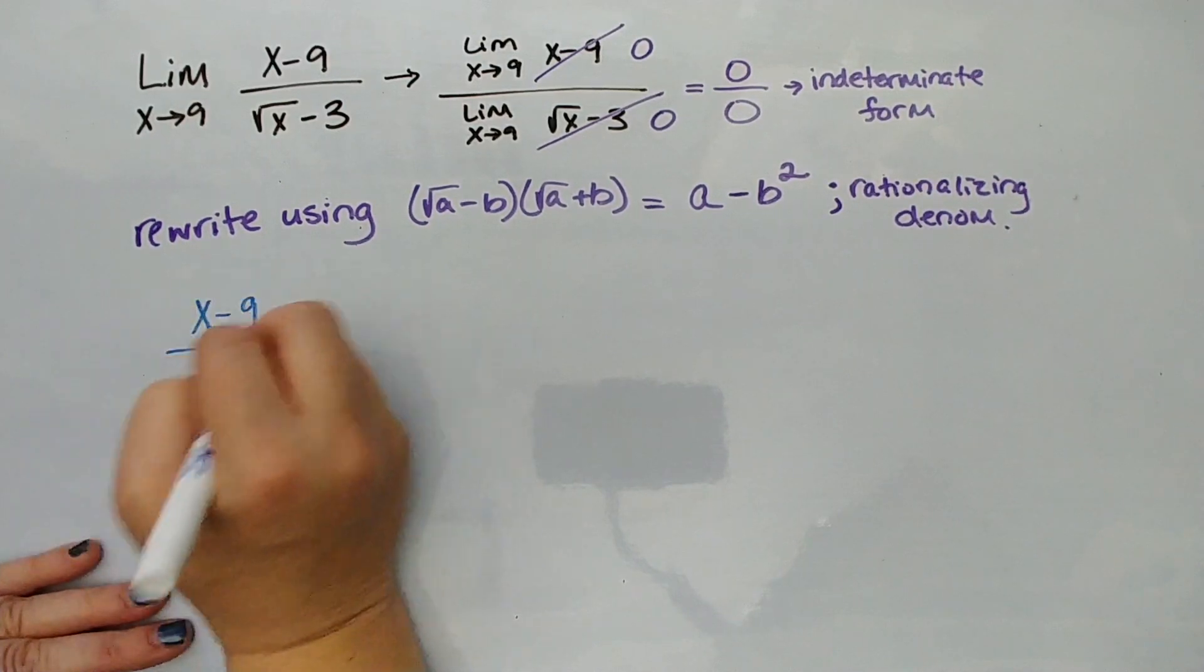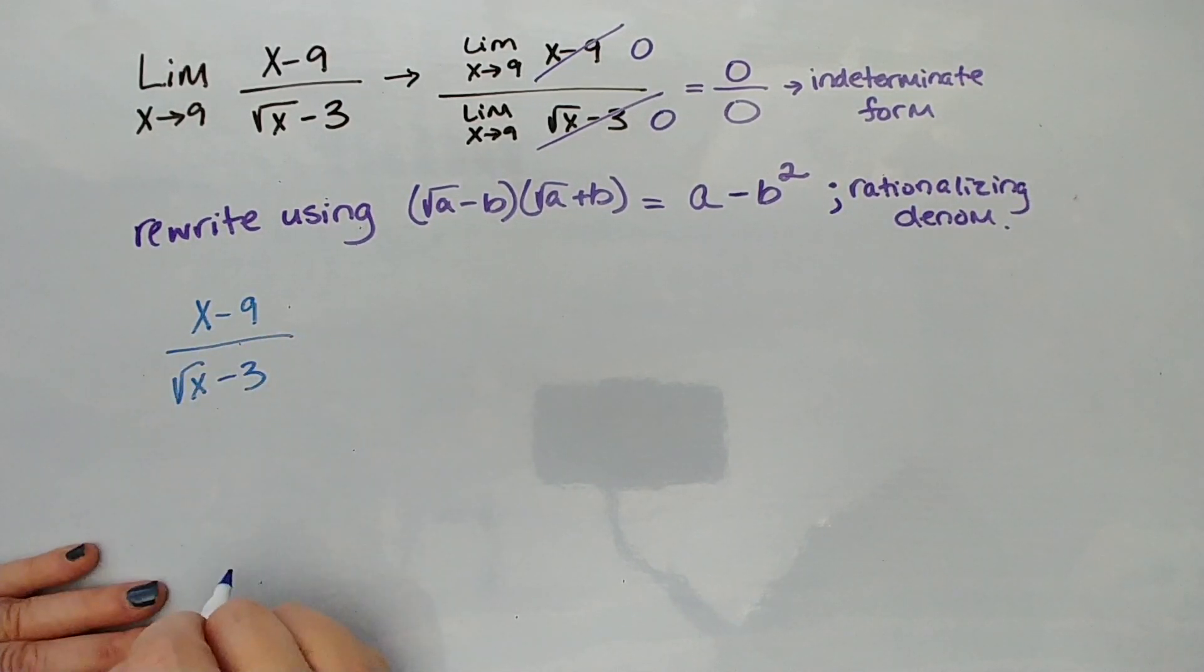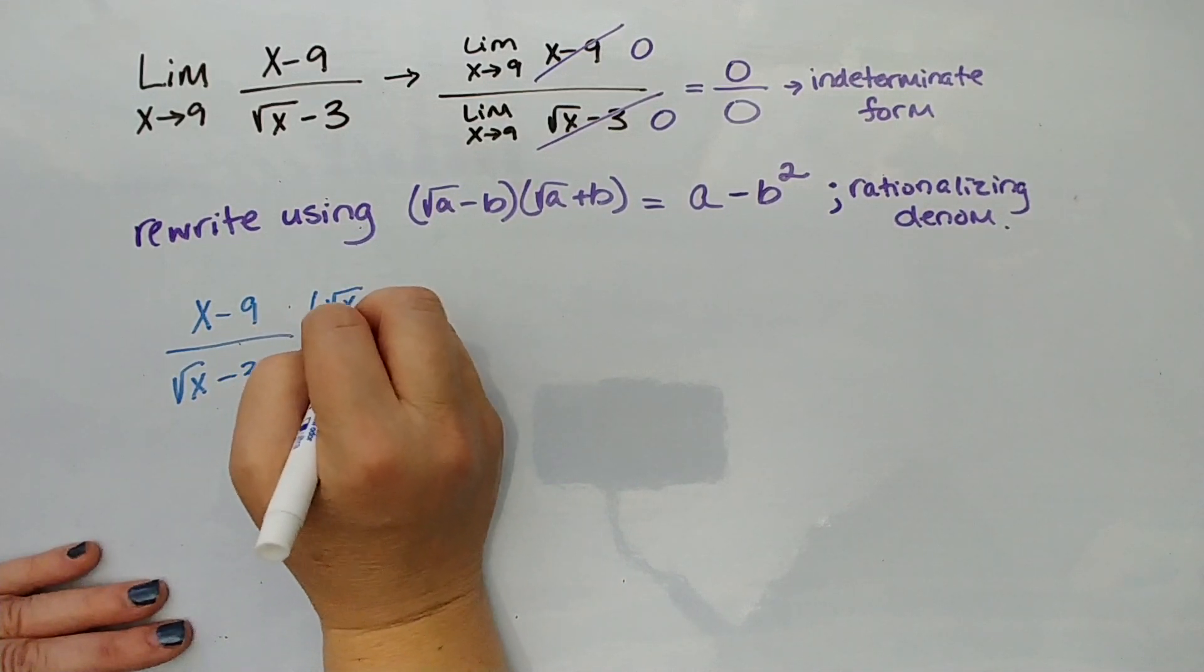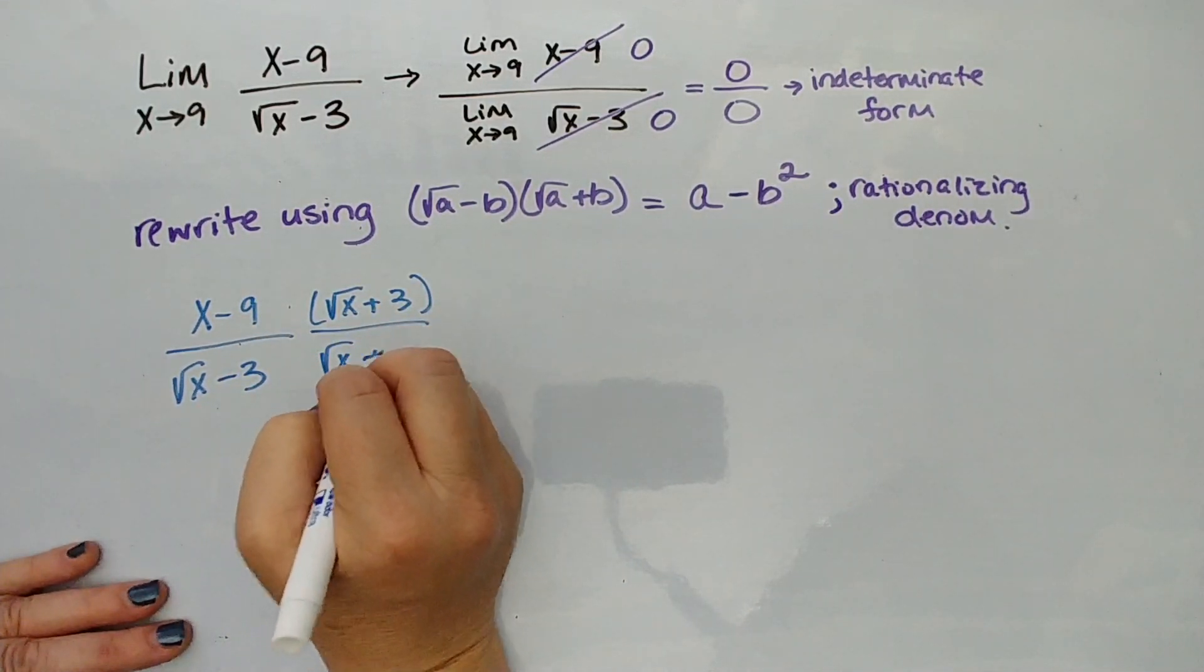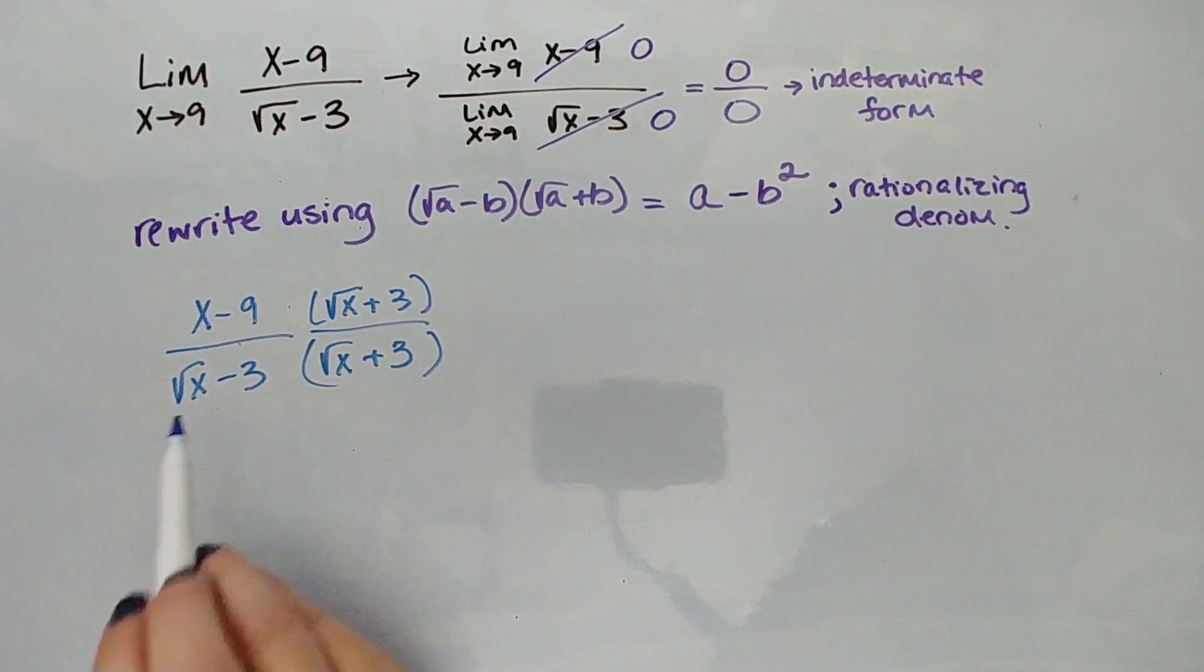We're doing this because when you have a limit at an interesting point and a radical in the denominator, the most efficient way is to get rid of that radical by rationalizing the denominator. We're not changing the value here. √x+3 over √x+3 is simply equal to 1, an ugly version of 1, but it's 1 nonetheless. We're simply doing this to get a form without a radical in the denominator.